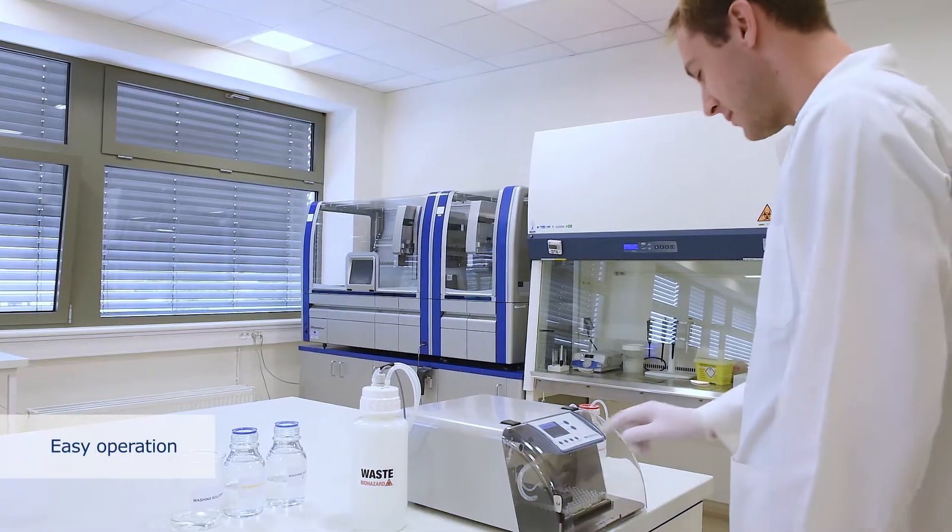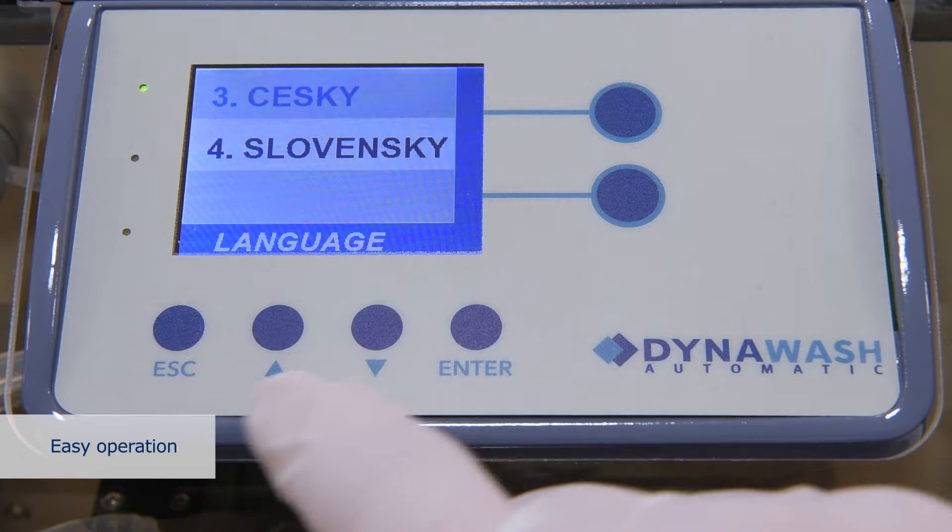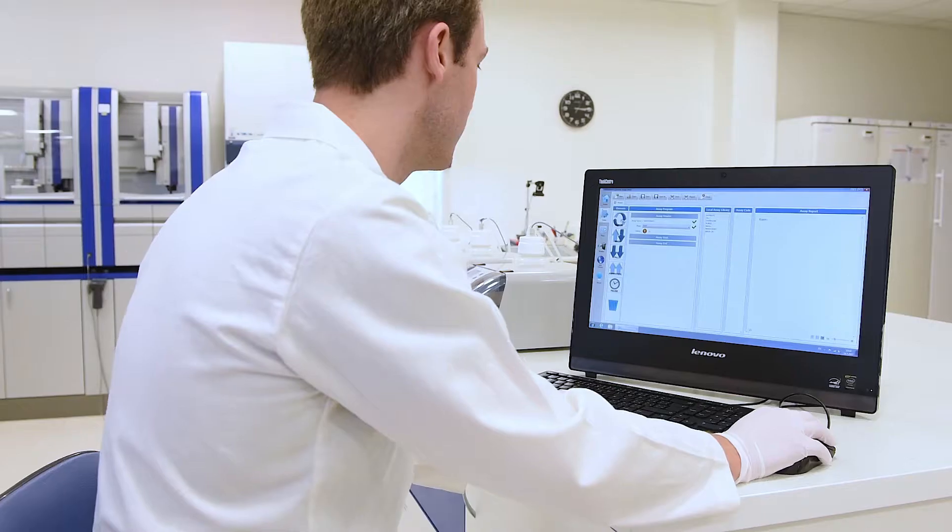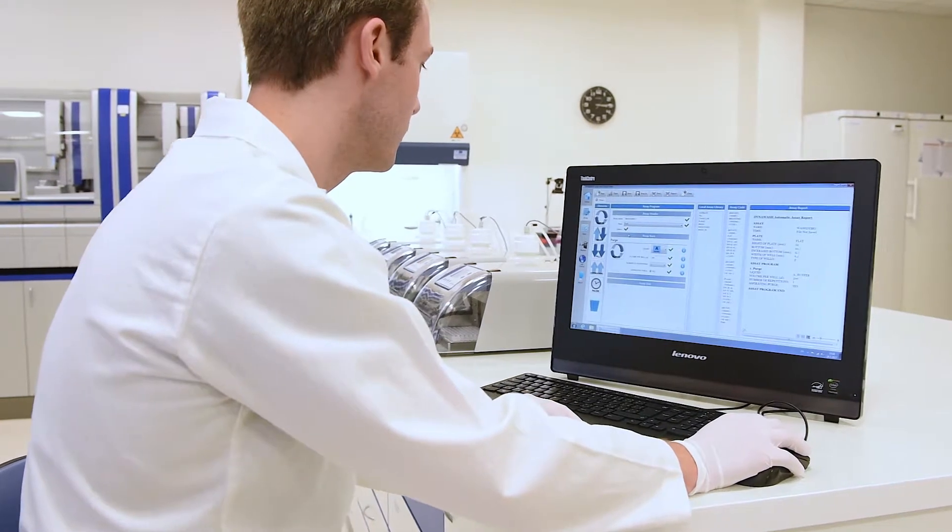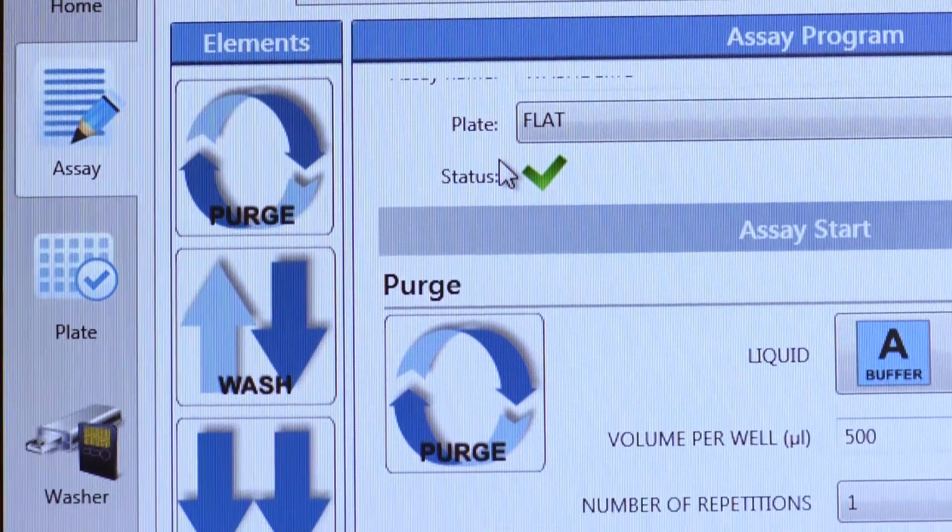The operation of DynaWash Automatic is easy using touch keyboard and color graphic LCD display. The user can select language version. Essay programming for DynaWash Automatic takes place on any PC. The PC software comes with the washer.